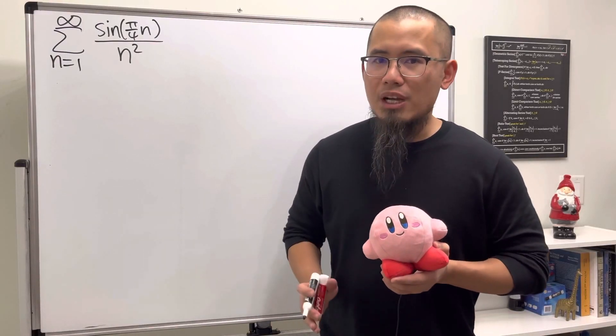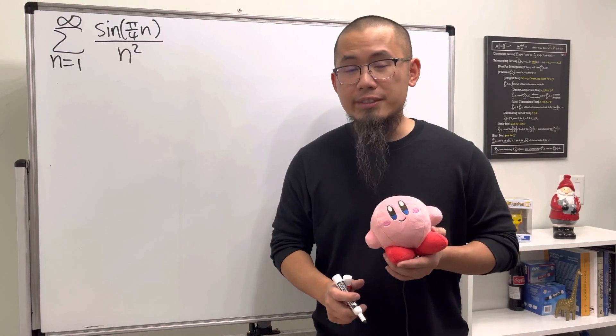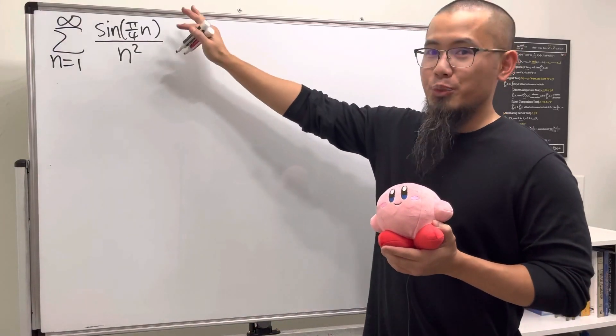When is it a good idea to check for absolute convergence rather than regular convergence? An answer I can give you is whenever we have a series that involves sine or cosine, especially if it's just on the numerator like that one.